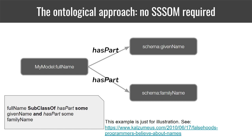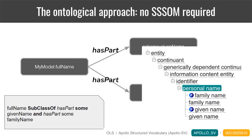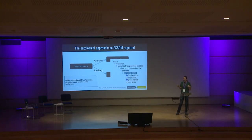Many of us are coming from the formal ontology community, so we might think: I can model this using my ontology. I can say a full name is a kind of concept that can be broken down using relationships like 'has part' from the OBO relation ontology — the name has parts: a given name and a family name. There's a wonderful essay linked there about falsehoods programmers believe about names. But let's pretend for now that names follow these simple rules. There are ontologies in OBO that represent these complex relationships between metadata elements such as personal names, family names, and given names.